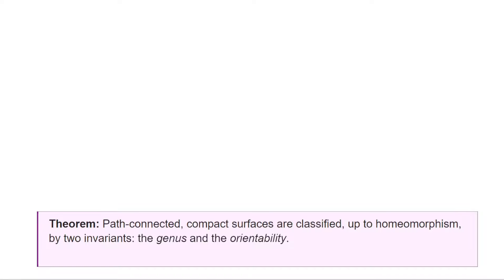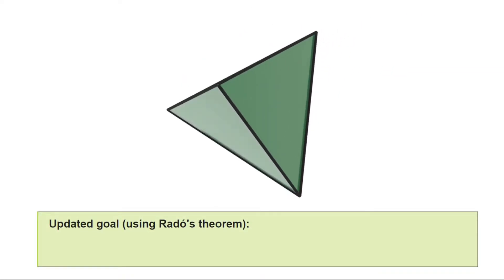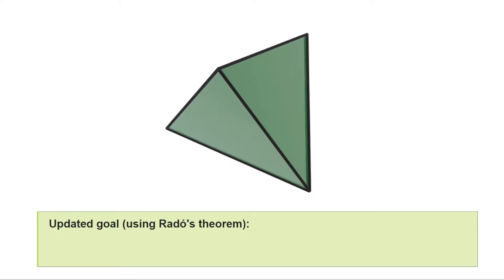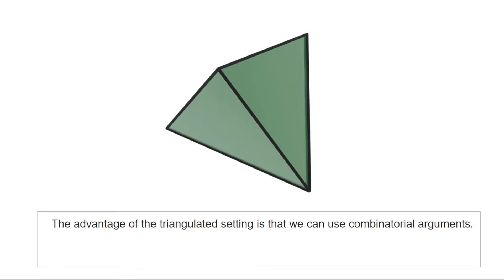You are already familiar with one of the ingredients needed for the proof, namely Rado's theorem. The theorem tells us that each topological surface admits a unique triangulation up to combinatorial isomorphism. For this reason, we can rephrase our goal by saying we want to classify up to homeomorphism all compact, path-connected, triangulated surfaces. The advantage of the triangulated setting is that it allows us to argue in a combinatorial manner.